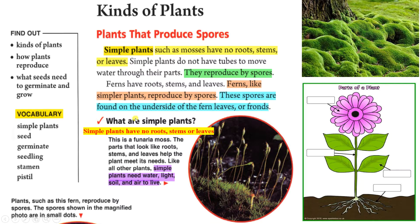What are simple plants? Simple plants have no roots, stems, or leaves. Simple plants need water, light, soil, and air to live.